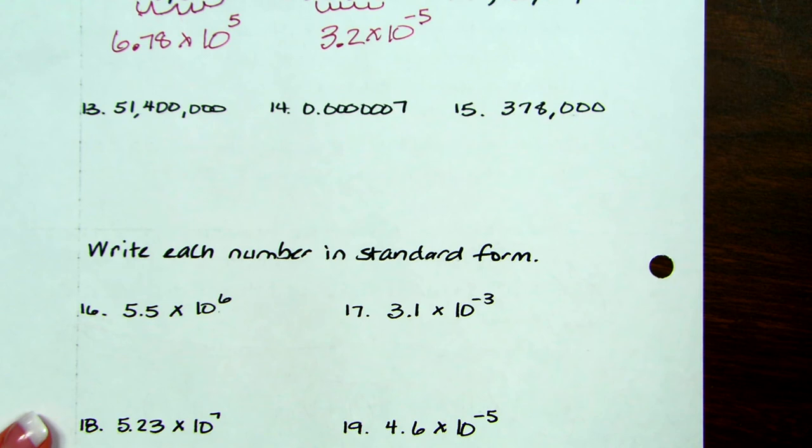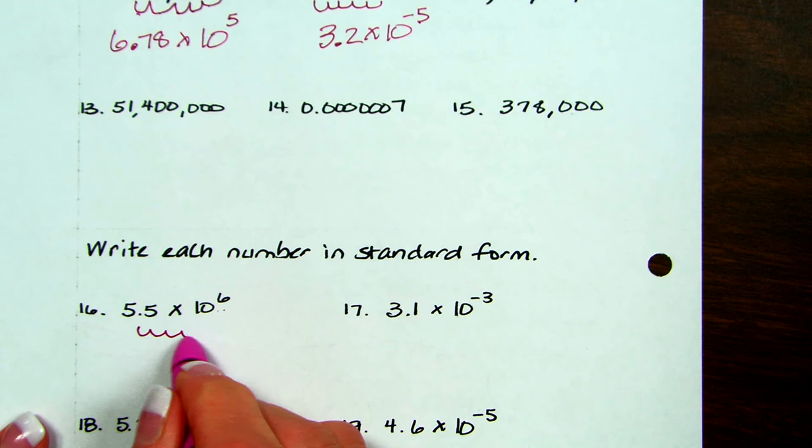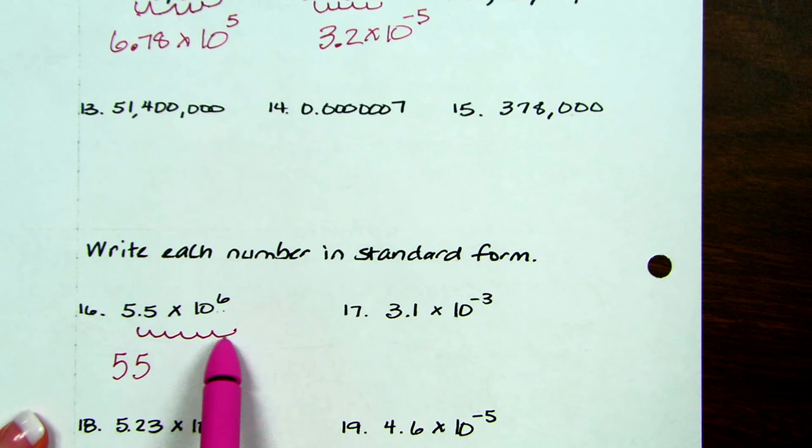All right. Look at the second group. If you're going to go from scientific notation to standard form, remember the positive exponent means you're going to go to your decimal and you're going to go 1, 2, 3, 4, 5, 6. So that means 5 and 5. And then 1, 2, 3, 4, 5 zeros. 1, 2, 3, 4, 5 zeros.